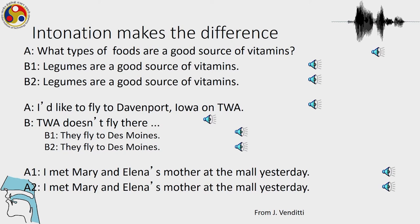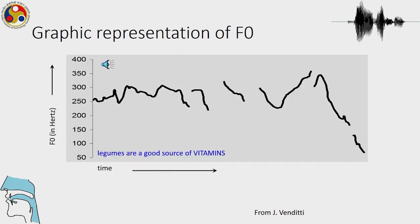Here is another declarative sentence where you can hear two ways to say a simple sentence: 'I met Mary and Elena's mother at the mall yesterday.' Again, you can emphasize different parts of the sentence and the intonation contour can add additional meaning. Let us look at a graphical representation of the F0 contour to understand intonation.